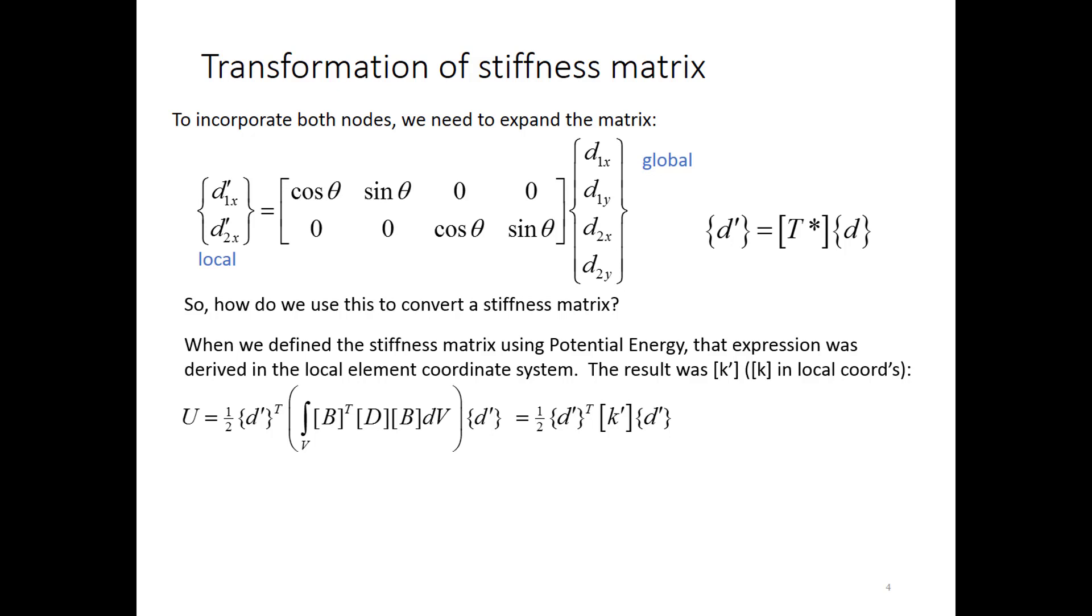Now, I have an expression here that will take that local coordinate degree of freedom vector and convert it to global coordinates, or vice versa. But if I take this expression, d prime, and I plug that in down here for the d primes, and then I do the same thing for the transpose. Remember, with the transpose, I have to reverse the order when I'm doing the multiplication. What I get is an expression where I've got the global degree of freedom vector, d, transpose, and then d on the right-hand side. And I've introduced some transformation matrices pre and post multiplied by my local k prime.